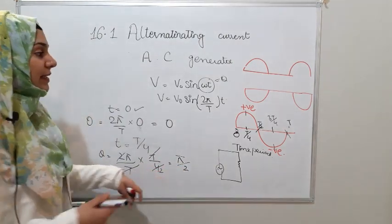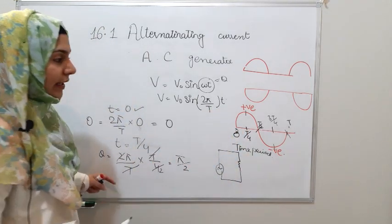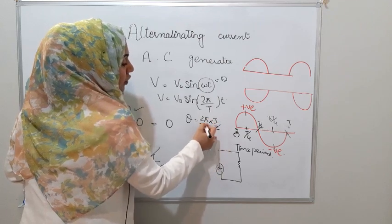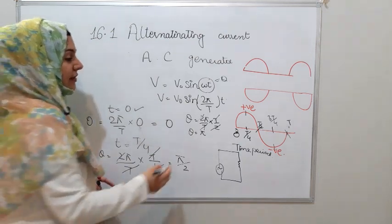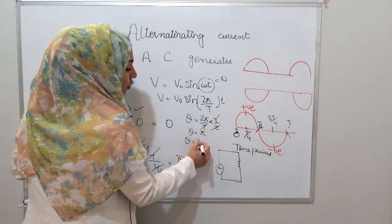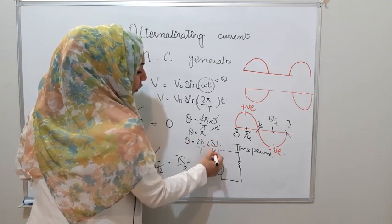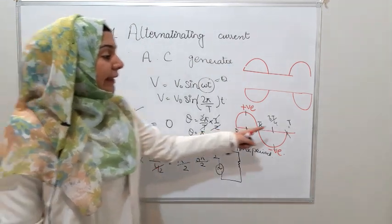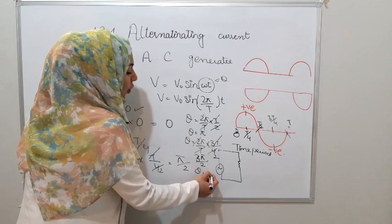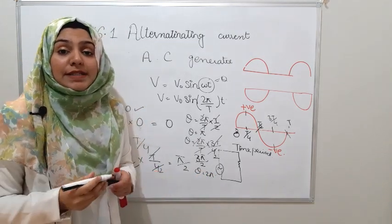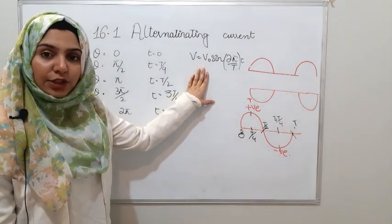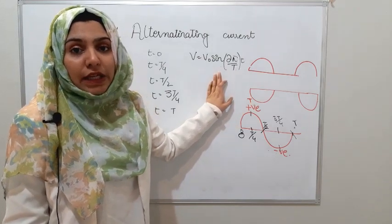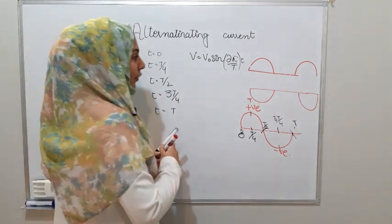Continuing: at t = T, theta = 2π, completing a full cycle. So at t = 0, theta = 0, sin(0) = 0, so V = 0. At t = T/4, theta = π/2, sin(π/2) = 1, so V = V₀ maximum. At t = T/2, theta = π, sin(π) = 0. At t = 3T/4, sin(3π/2) = −1, so V = negative maximum. At t = T, sin(2π) = 0, completing the wave pattern.